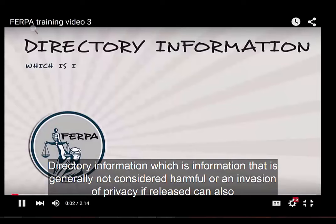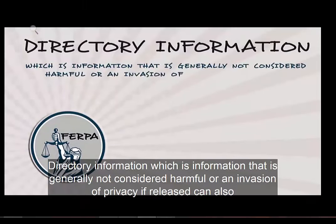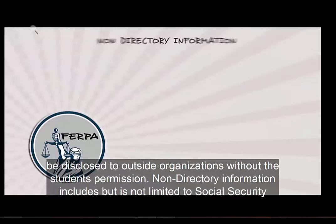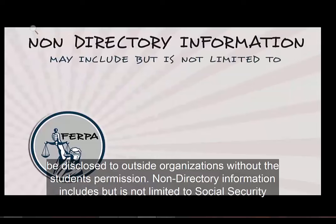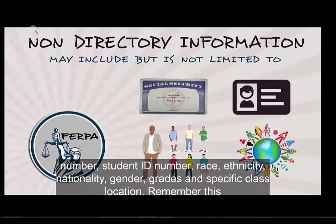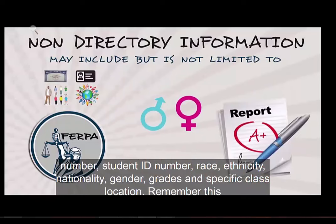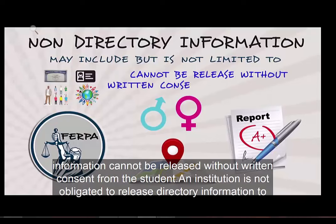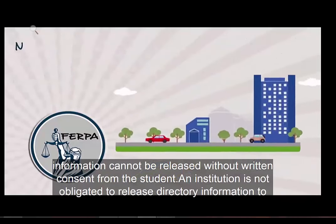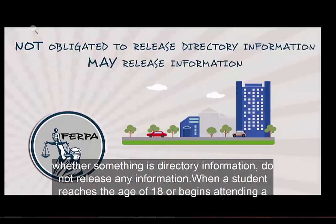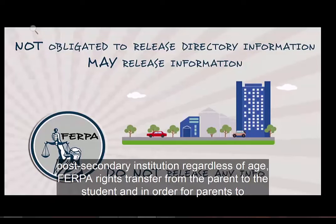Directory information, which is information that is generally not considered harmful or an invasion of privacy if released, can also be disclosed to outside organizations without the student's permission. Non-directory information may include but is not limited to social security number, student ID number, race, ethnicity, nationality, gender, grades, and specific class location. Remember, this information cannot be released without written consent from the student. An institution is not obligated to release directory information to anyone — FERPA states only that an institution may release information, but there is no obligation to do so. When in doubt about whether something is directory information, do not release any information.